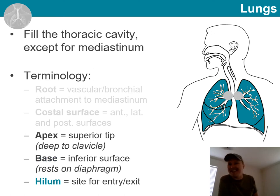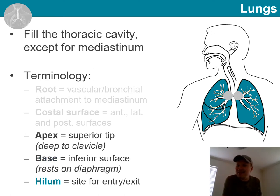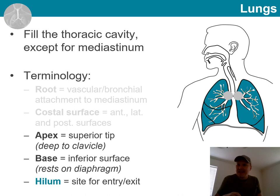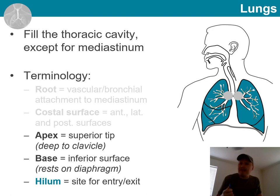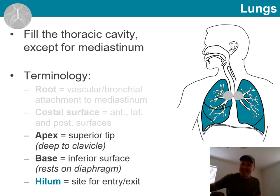We have already discussed the hilum, which is on the mediastinal surface — the space between the lungs. The hilum is an area where the bronchi, as well as blood vessels, lymphatic vessels, and nerves, all enter and exit the lungs.